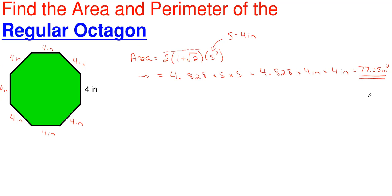This gives us a value of 77.25 inches squared for the area of this regular octagon — that's how much area we have in green inside it. Keep in mind that your units have to be squared here, because anytime you have a unit being squared, that represents area. The 4.828 will always be that value no matter what your side is. Our side here was four inches, but if it was two centimeters, it would still be 4.828 times your side times your side.